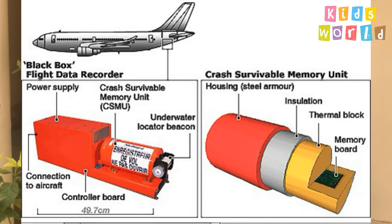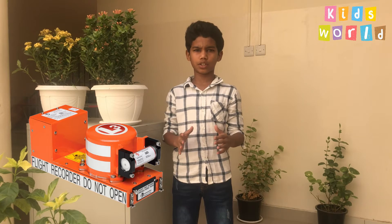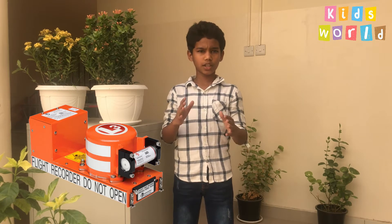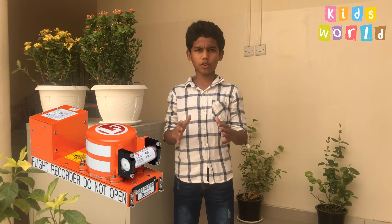Do you know what a black box is? Do you know what color a black box is? Yes, it is orange color, not black color as mentioned in the name. A flight recorder is an electronic recording device placed in an aircraft for the purpose of facilitating the investigation of aviation accidents and incidents. Flight recorders are also known by the misnomer 'black box.' They are a very bright orange color to aid in their recovery after accidents.